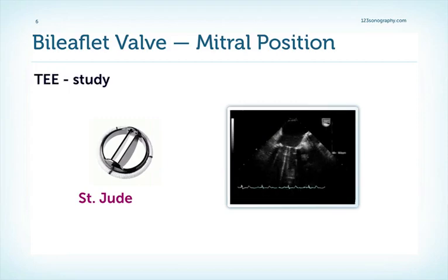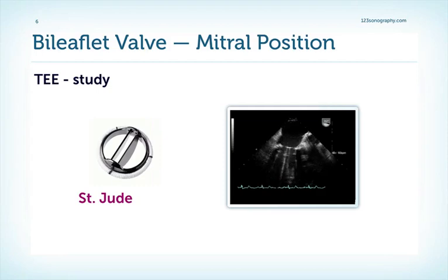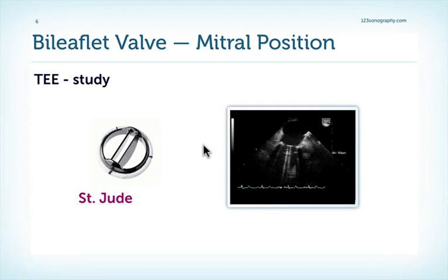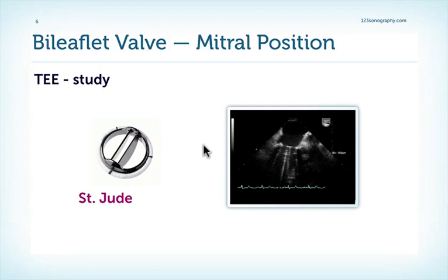It is not always possible to really delineate the two leaflets from a transthoracic approach. From a transesophageal approach, it is much easier. Here is an example of a TEE study where we can nicely see the opening and closure of a bi-leaflet valve. The best way to really visualize the valve is, of course, fluoroscopy — but we'll talk about the value of fluoroscopy a bit later.